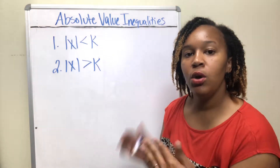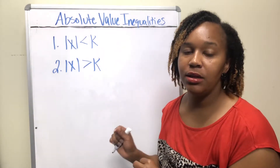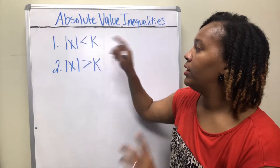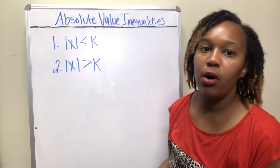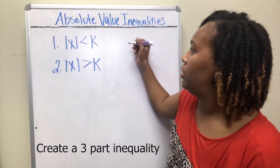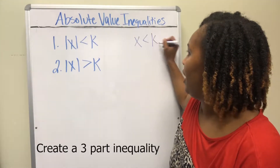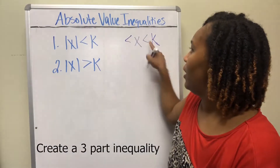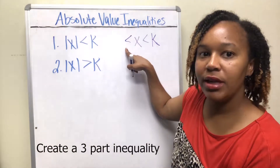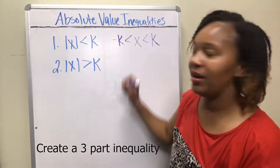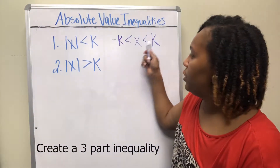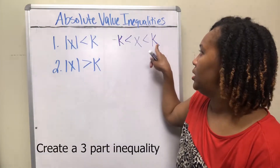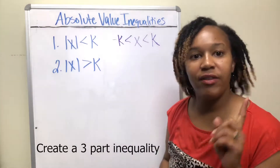The first rule is to pay attention to whether the absolute value is less than or greater than the number. Case one: if you have the absolute value of something and it's less than a number, then you create a three-part inequality. You do this by dropping the absolute value bars, sticking that same inequality on the left side of the variable, and placing the negative of that number on the other side.